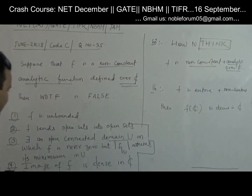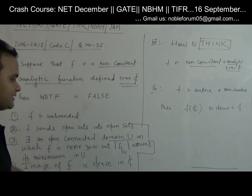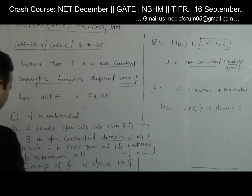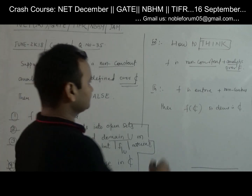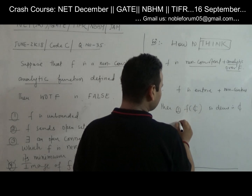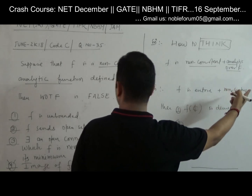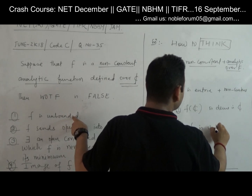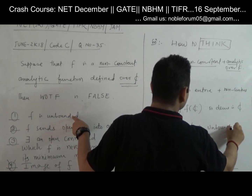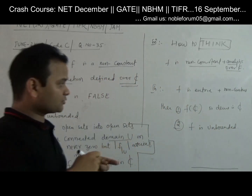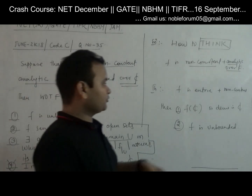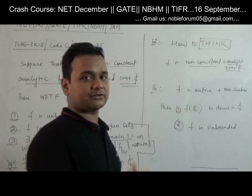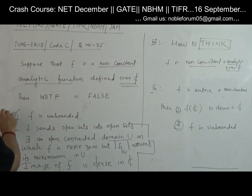So option D — the image of f is dense in ℂ — is a correct statement. And here we have to find the false statement. So option D is correct. Also, f is non-constant and entire, so f is unbounded — that is also a correct statement. So option C is also correct.